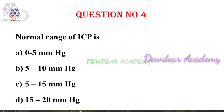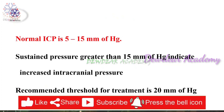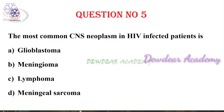Next question: Normal range of intracranial pressure is — options: 0 to 5, 5 to 10, 5 to 15, or 15 to 20 millimeters of mercury. The right answer is 5 to 15 millimeters of mercury. Normal ICP is 5 to 15 mmHg. Sustained pressure greater than 15 mmHg indicates increased intracranial pressure.